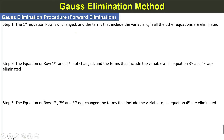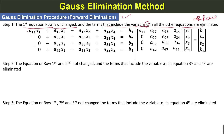Now we discuss the Gauss elimination procedure and forward elimination method. In step one, the first equation or row is unchanged, and the terms that include the variable x1 in all the other equations or rows are eliminated. So except for the first row, all elements that include x1 are set to 0.